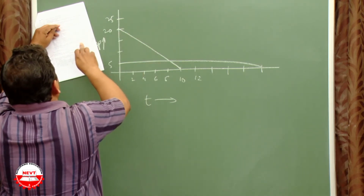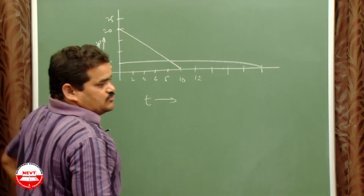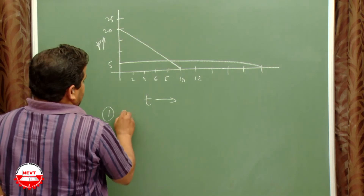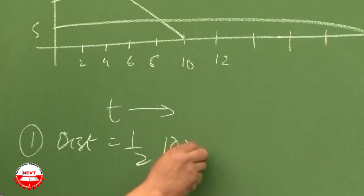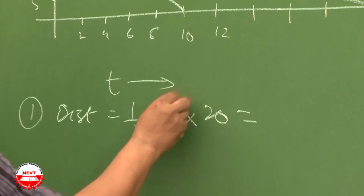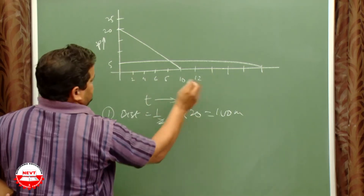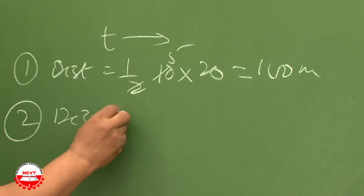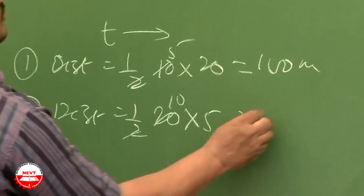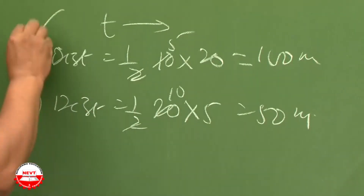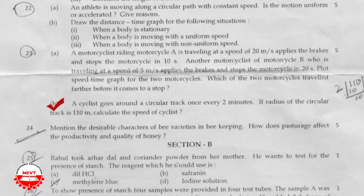To find which motorcycle travels further, calculate the area under the speed-time graph. For motorcycle A: distance = ½ × base × height = ½ × 10 × 20 = 100 m. For motorcycle B: distance = ½ × 20 × 5 = 50 m. So motorcycle A travels further.